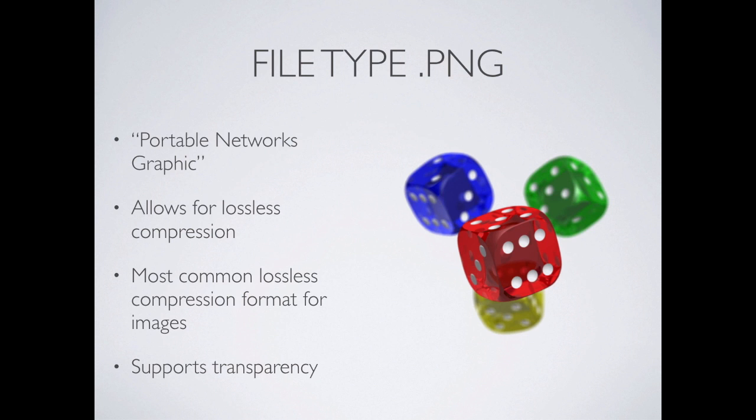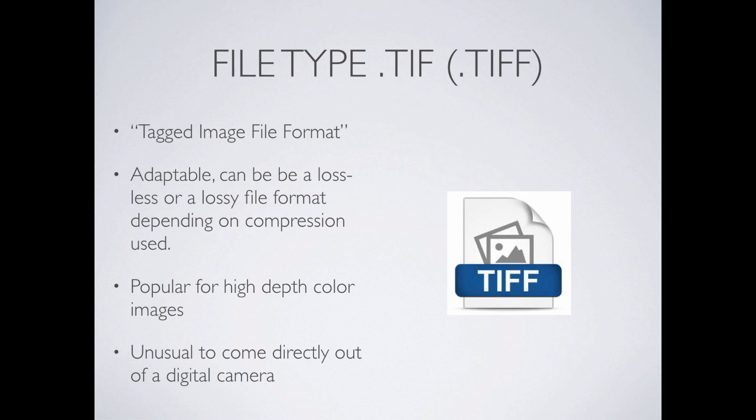The TIFF — Tagged Image File Format — is very good in that it doesn't lose anything, kind of like a PNG. It preserves a lot of the data and is very popular for high-depth colors. If we did a high dynamic range image and compiled three images into one, TIFF is the general result of that. We can always strip it down into a JPEG with a save-as. It's very unusual for a TIFF to come directly out of anything — you won't get a TIFF out of your phone; you'd have to actually create or build it.